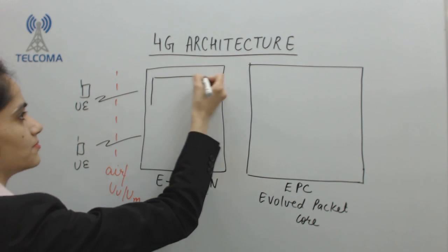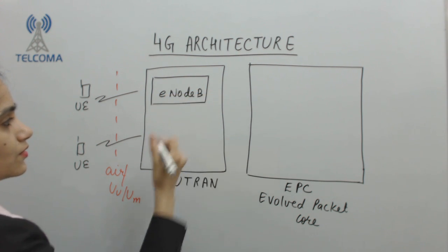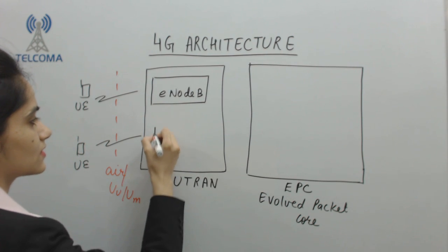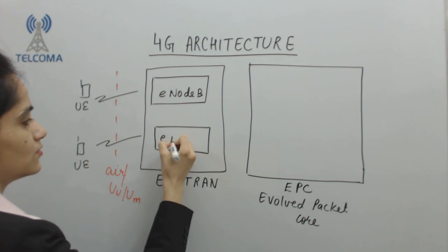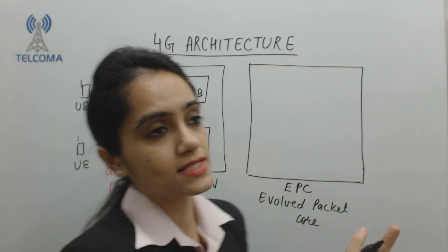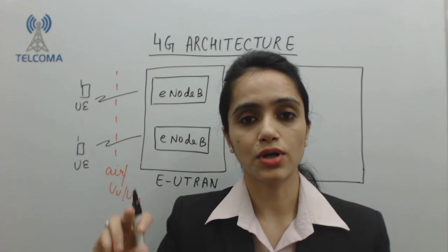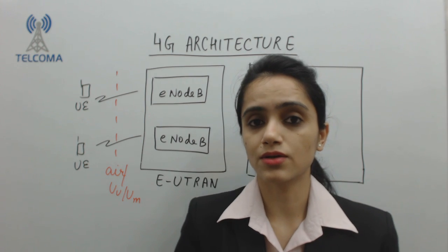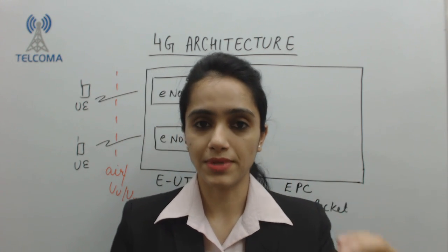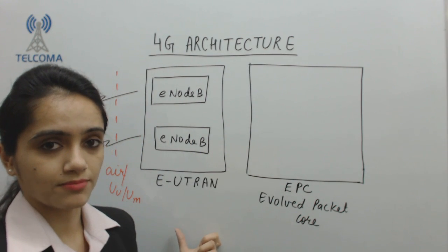In the EUTRAN part we have two entities named ENodeB, where ENodeB stands for Evolved Node B. For example, in EUTRAN part we have two ENodeBs. In 4G there is no separate controller for ENodeBs, like in 3G for NodeBs we have a separate controller RNC, or in 2G for BTS we have BSC. But in 4G we have eliminated a separate controller from the EUTRAN part.